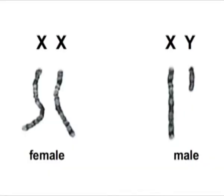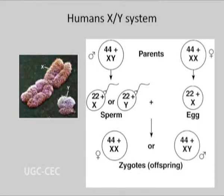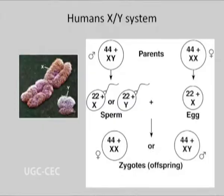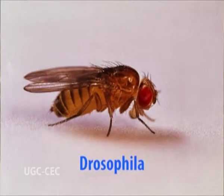In the XX female / XY male type, the females carry XX chromosomes and produce similar gametes, all carrying one X chromosome, so females are said to be homogametic. The males carry XY chromosomes and produce two different types of gametes: 50% carry X chromosome and 50% carry Y chromosome, so males are said to be heterogametic. Examples include Drosophila and humans.